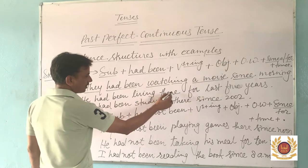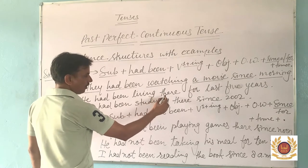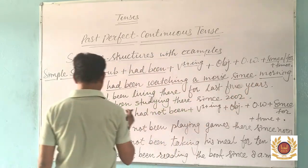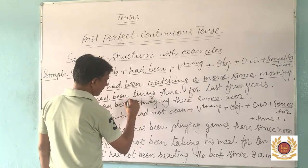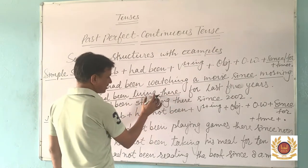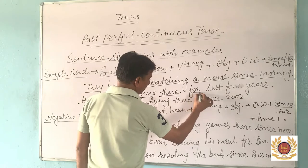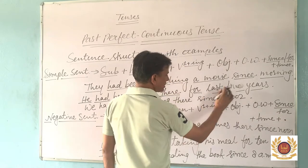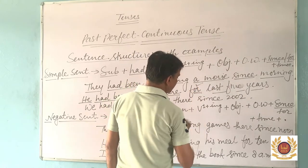Next example: 'He had been living there for last five years.' The action of living there was going on for a period of time. 'He' is the subject, helping verb is 'had been', first form of verb is 'live' with '-ing' as 'living', 'there' is another word, and there is no object. 'For' is the adverb, because 'last five years' shows a period of time — so 'for' is used here.